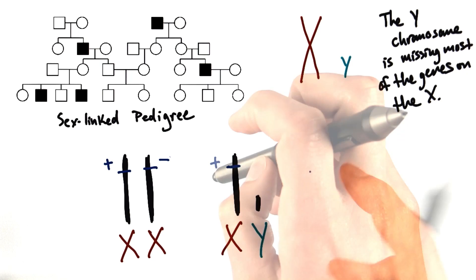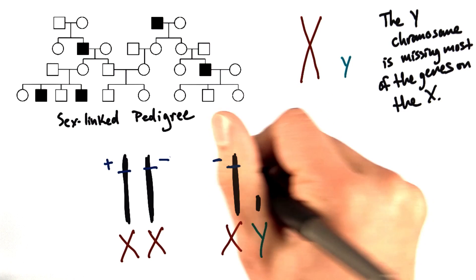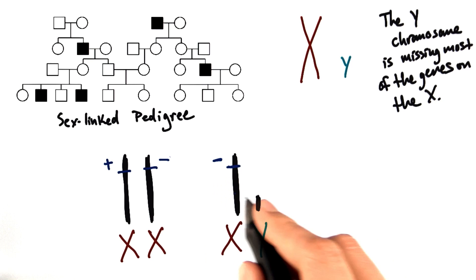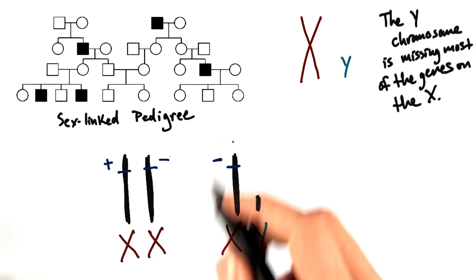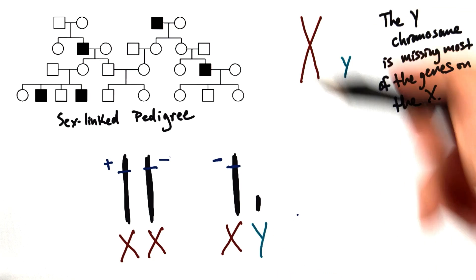He's going to see color vision just fine. But if he inherits even just one allele, one recessive allele for red-green colorblindness, that's all it takes. He doesn't have anything to counteract the effect and so he's going to be red-green colorblind.